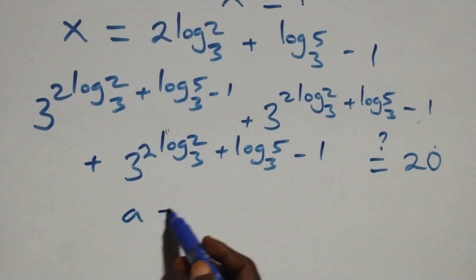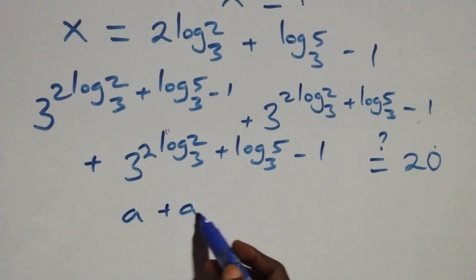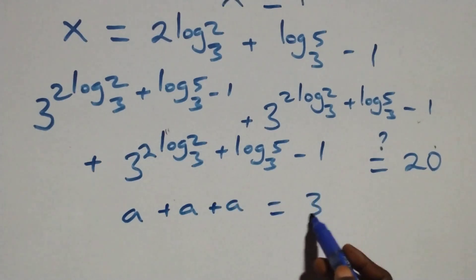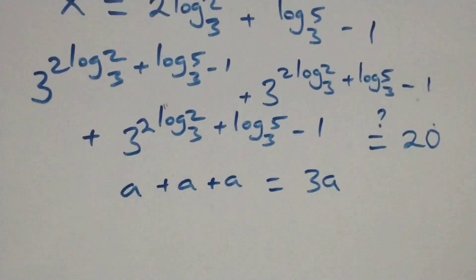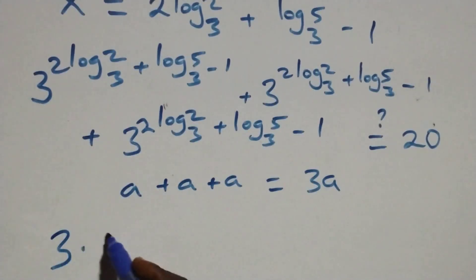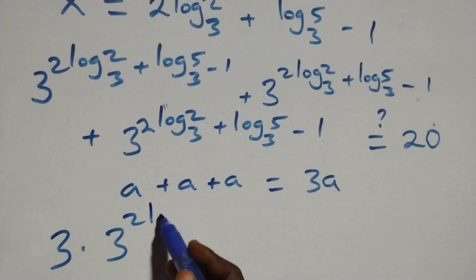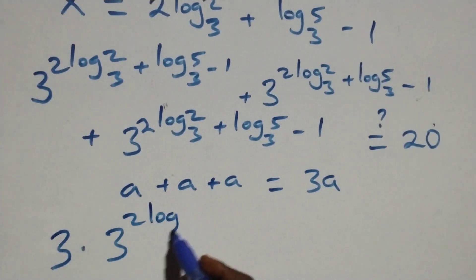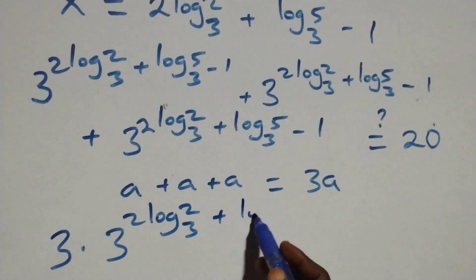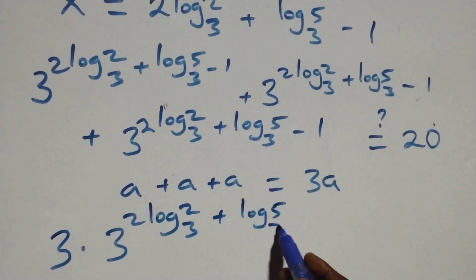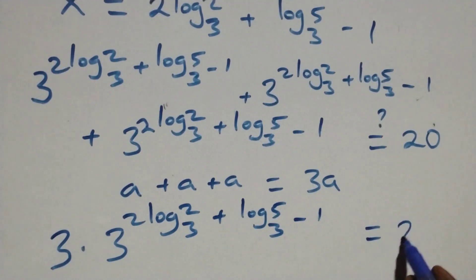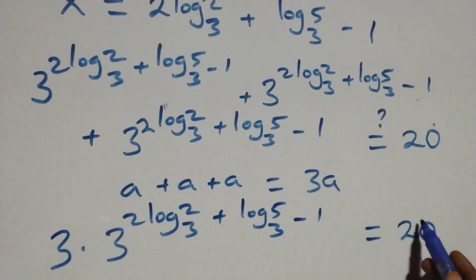Since we have the same term three times — a plus a plus a can be written as 3a — we can write this as 3 times 3 raised to power (2 log 2 base 3 plus log 5 base 3 minus 1), which equals 20.